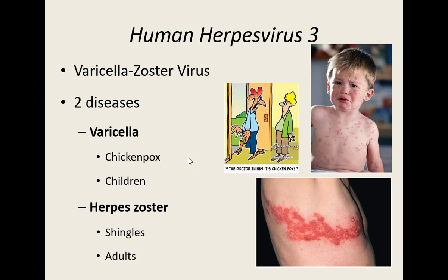Human herpesvirus 3 is known as the varicella-zoster virus, and this same virus causes two different diseases depending on whether it's the first infection or a reactivation. It's called varicella-zoster because the first disease is called varicella — chickenpox — and the second disease is called herpes zoster, or shingles. I had chickenpox as a kid before there was a vaccine, so yes — I've had herpes. I had human herpesvirus 3.